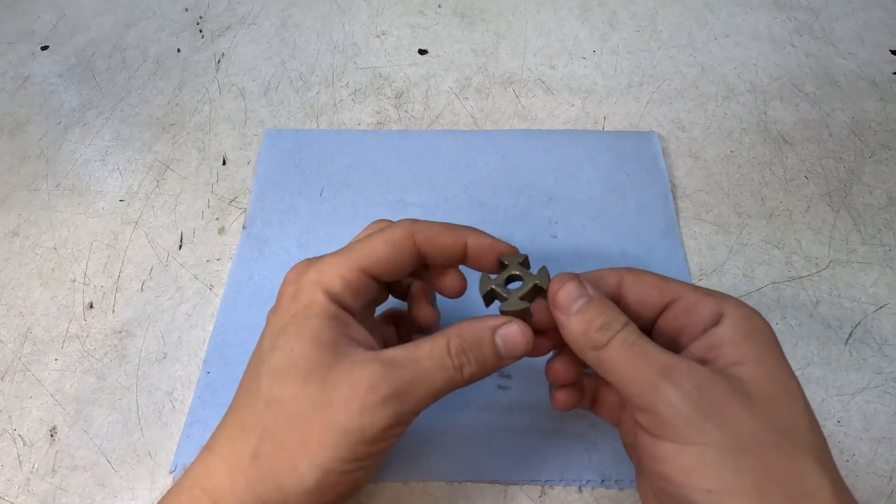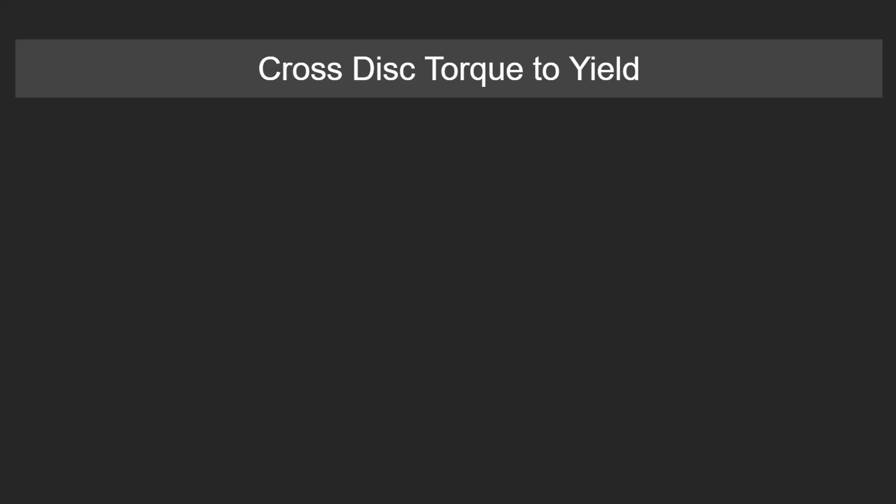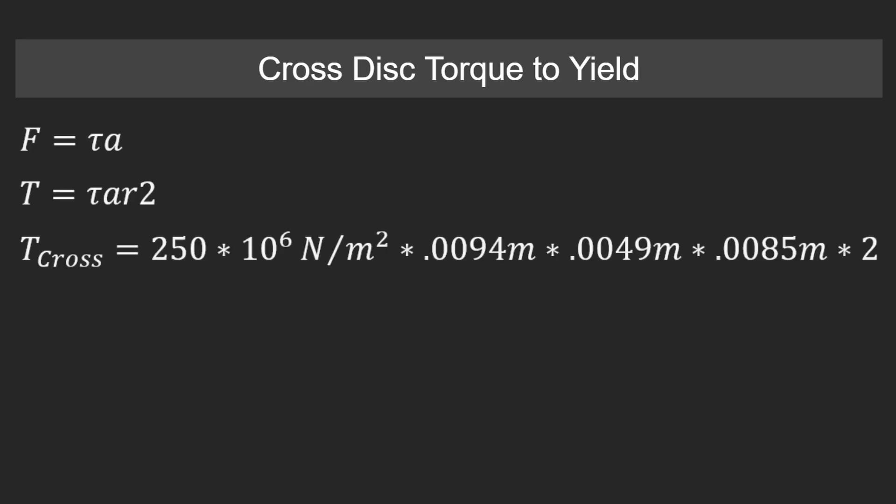For our calculations, we're going to be doing the same pure shear formula. And for our A, we're going to consider our cross-sectional area to be that little area where it broke. And doing the math, we end up getting the torque to yield for our cross-section is 195 newton meters or 143 foot-pounds. And that is the lowest.